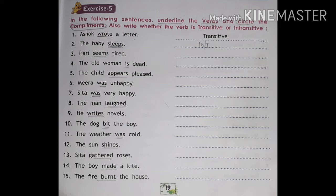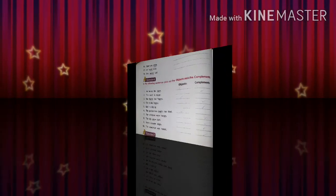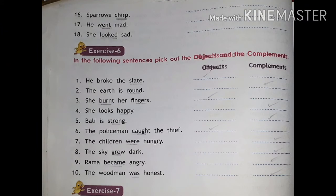Number fifteen: the fire burned the house. The house is the object, so it is a transitive verb — 'burned'. Number sixteen: sparrows chirp. 'Chirp' is the verb and there is no complement, so underline 'chirp'. Number seventeen: he went mad. Underline the verb 'went' and 'mad' is the complement. Number eighteen: she looked sad. Underline 'looked' — she looks sad, so 'sad' is the complement.